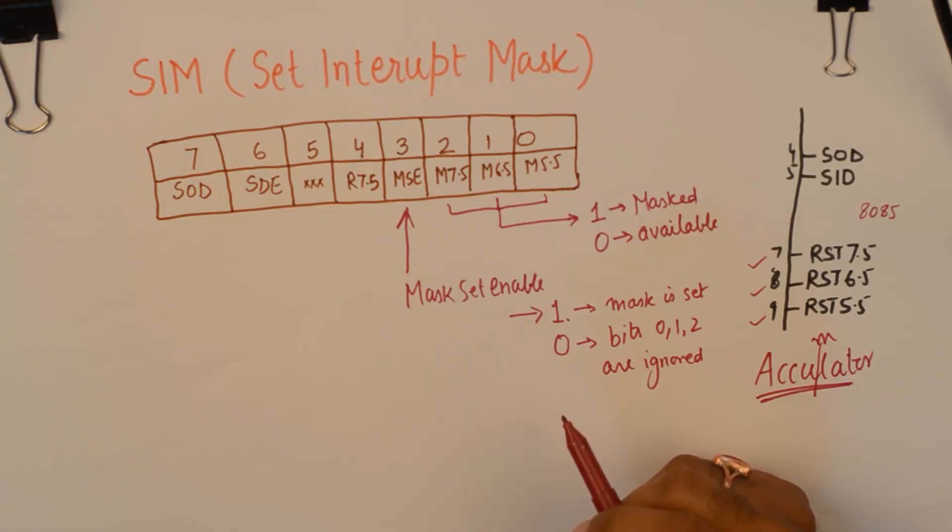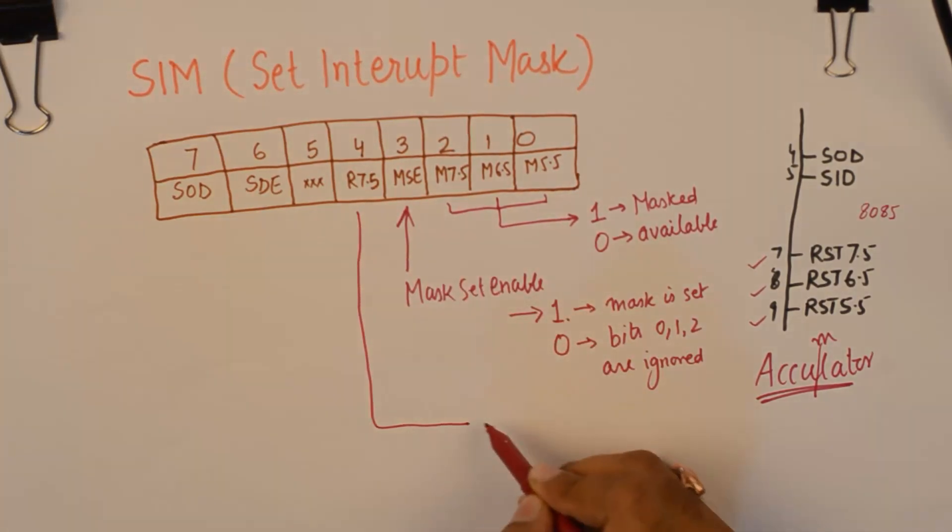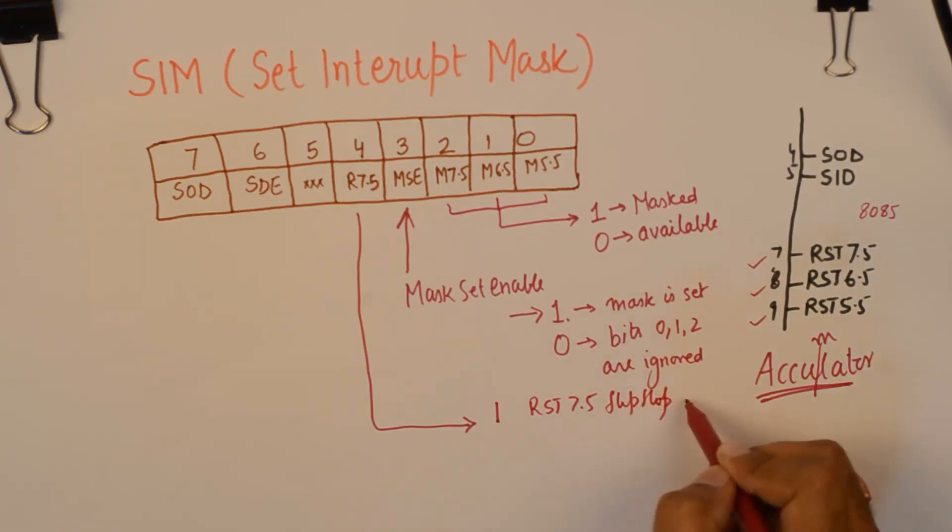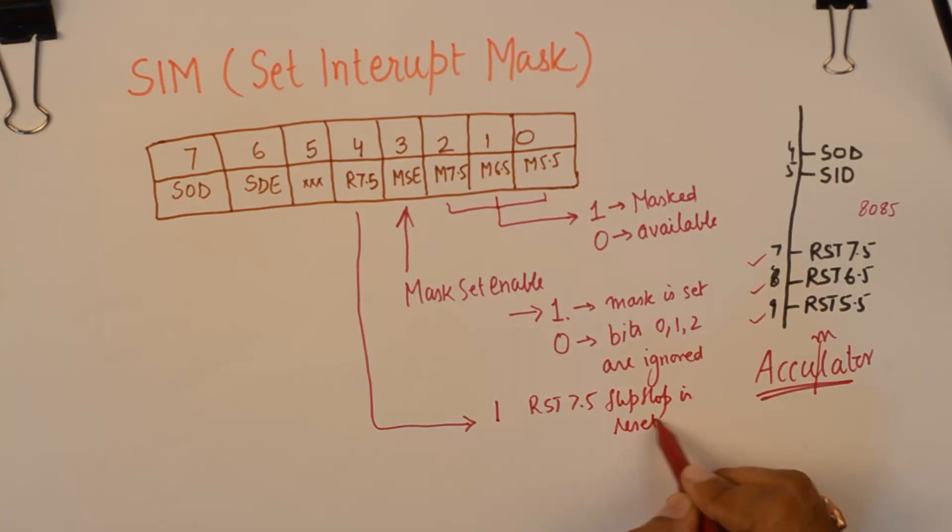If you wish to reset an already executing interrupt 7.5, then you have a special bit that is going to reset 7.5 if it is being serviced. And for that you will need to make it 1.